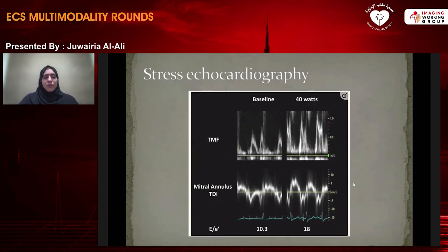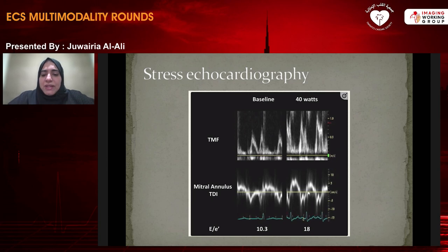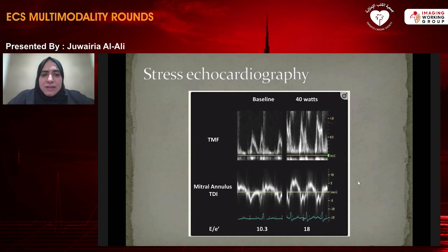Stress echo can help if you don't find features of diastolic dysfunction at baseline. If at baseline you have an E to A ratio less than 0.8 and normal tissue Doppler, but with exercise there is an increase in E velocity with no significant increase in E prime, this leads to a significant E to E prime ratio, meaning you have an increase in filling pressures.